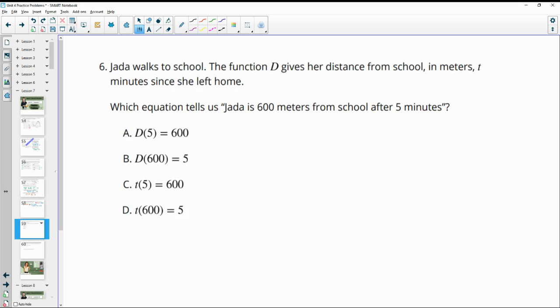Number six, again, Jada walks to school. It's this same function that we just did in number five. So which equation tells us that Jada is 600 meters from school after five minutes? So remember we said that this function gives us the distance when we input the time. So when we put the time since she left, it'll give us back the distance. And so this distance is 600 that we want back, and the time is five minutes. So we want it to be D of 5 equals 600, which is letter A.